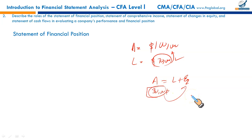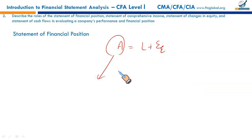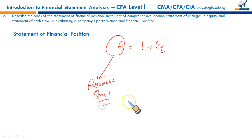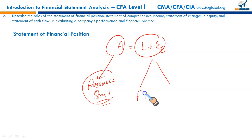This is called residual interest, and this accounting equation — assets equals liabilities plus equity — you would have studied in elementary accounting. One important aspect: the left side of the equation showing different types of assets — current and non-current and their composition — is called the resource structure. Where these resources have come from, how they have been funded, is shown on the right side, which is called the capital structure or financing structure.